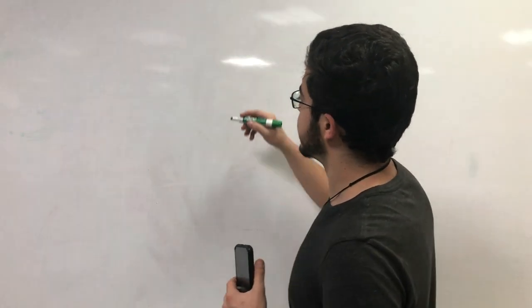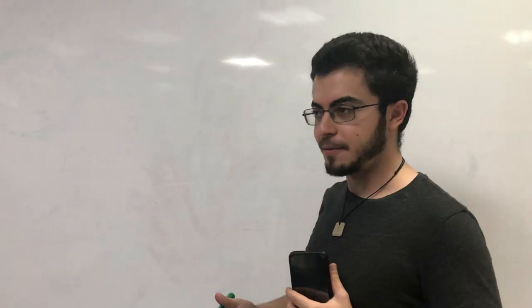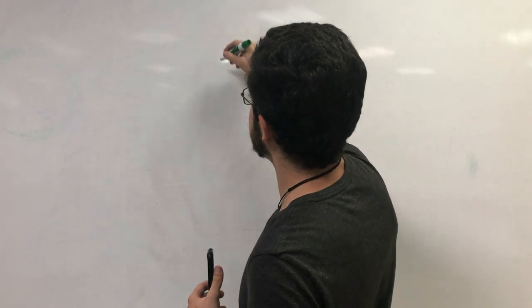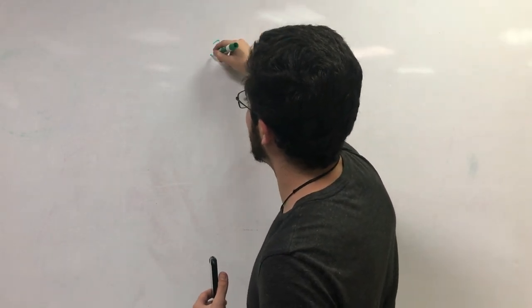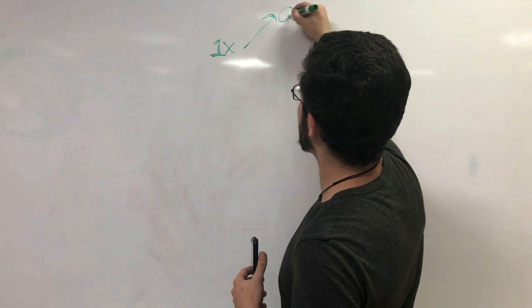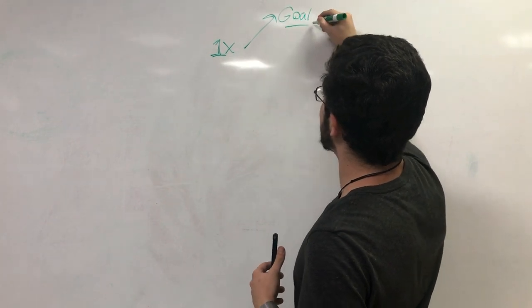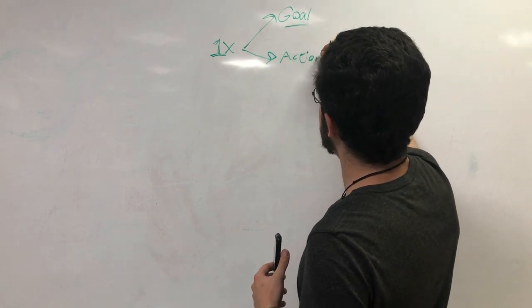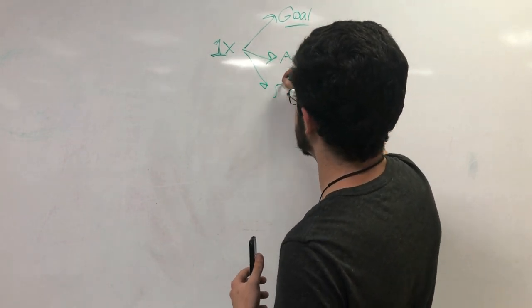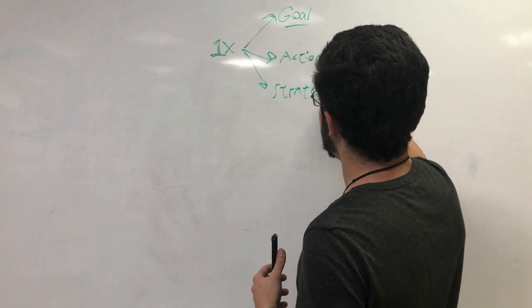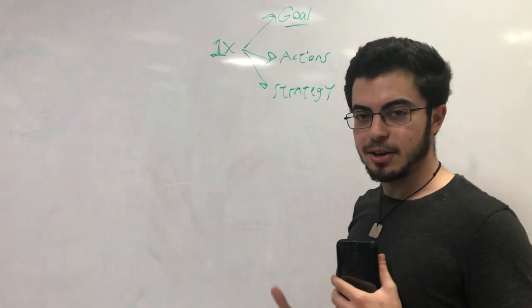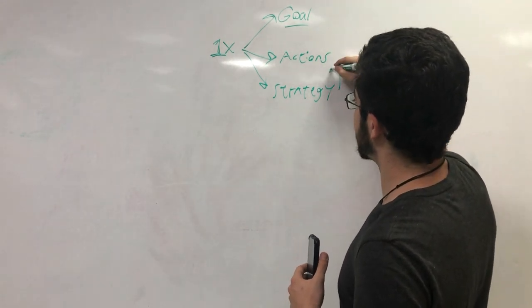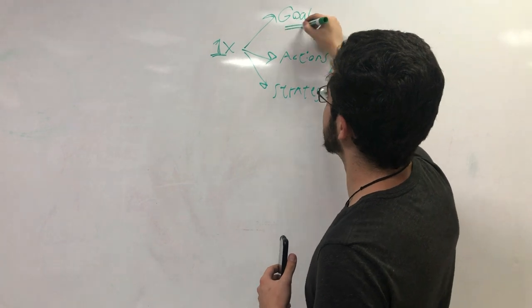So when you have a business and you are a business, even if you don't actually have a business, you are a business, you basically most of the time thinking 1x. So you're thinking, I have this goal and I want to get to this goal and I'm going to take these actions and this is how I'm going to get there. So this is my strategy. Once you actually find something good, once you actually find something that works for you, you have the right strategy that leads to the right actions and then you get to the goal.